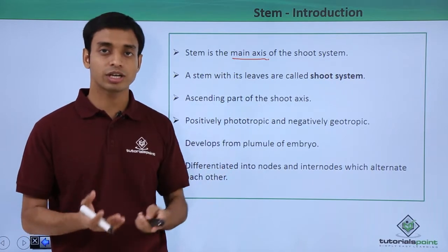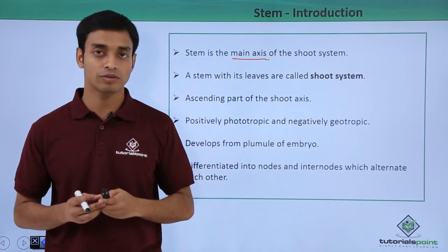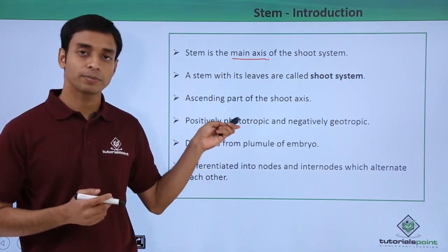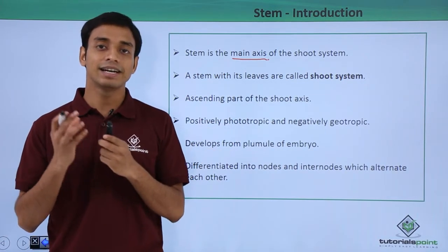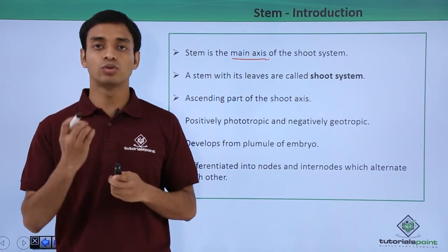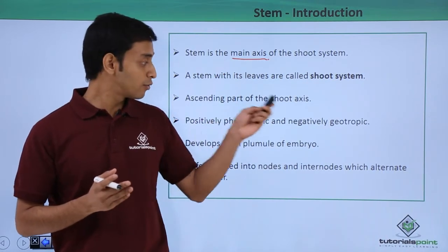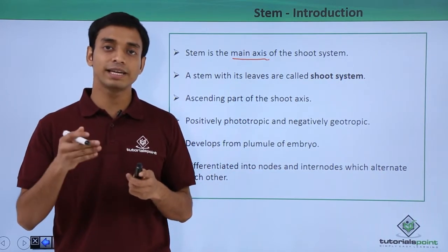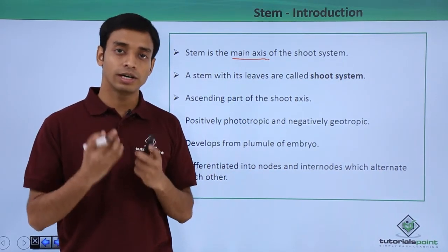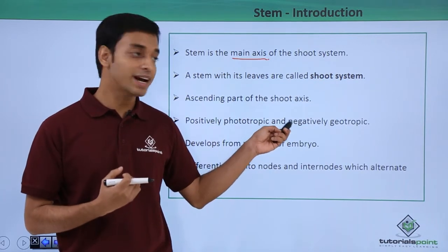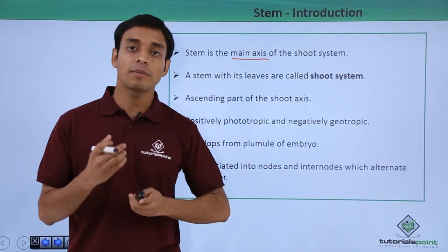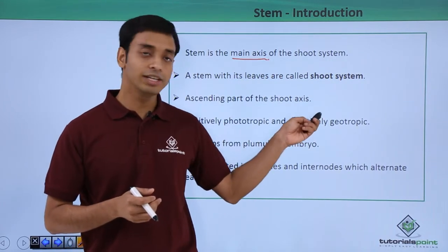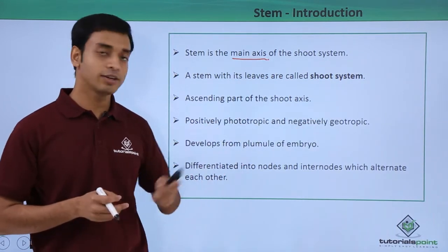The shoot system is the ascending part of the axis. It is very importantly positively phototropic, which means it moves towards light. In contrast, roots are positively geotropic, meaning they move towards the earth or soil. The stem, however, is negatively geotropic — it comes out of the soil and moves against it, while also being positively phototropic.